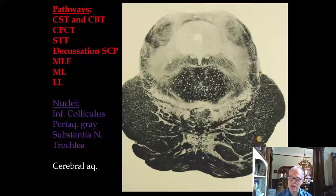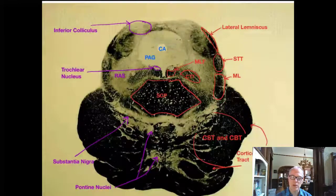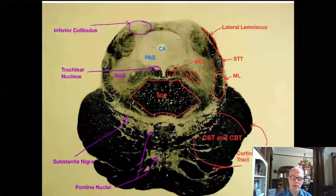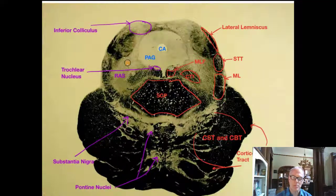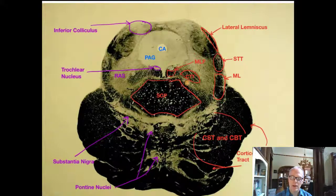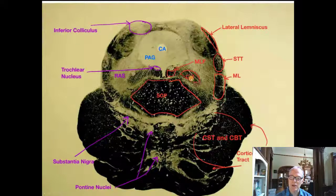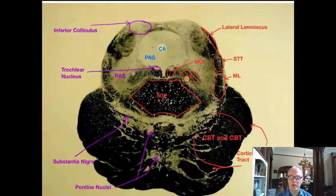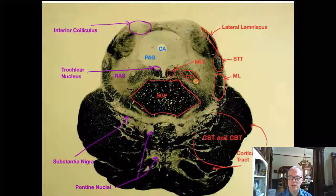The substantia nigra sits right adjacent to the cerebral peduncle. Among all the labeled structures, this area also contains part of the reticular activating system. The central tegmental tract carries information from the red nucleus to the inferior olive — we are above the inferior olive here, which is in the medulla, and on the next slide we'll see the red nucleus where these fibers synapse.